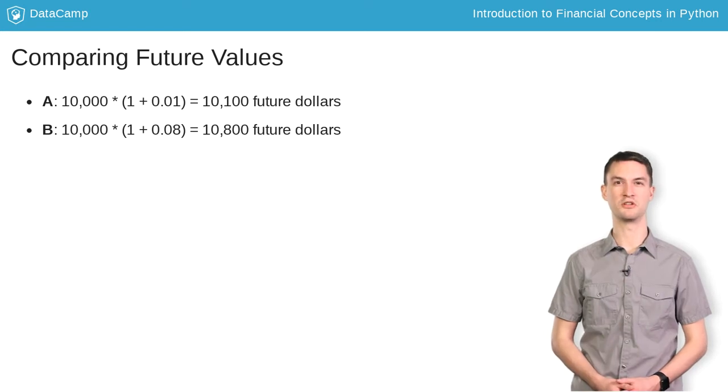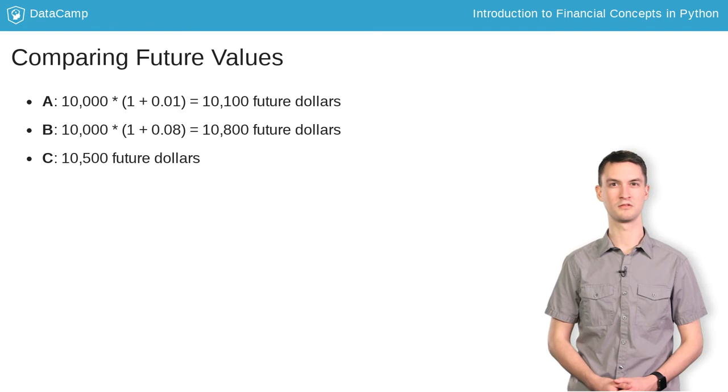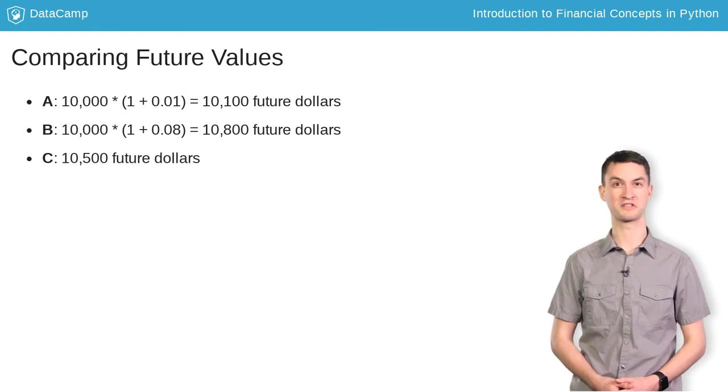This leaves you with a decision based only on risk. If you don't want any risk, take option C, which pays you $10,500 future dollars guaranteed. If you aren't afraid of risk, take option B for an average return of $10,800 future dollars.